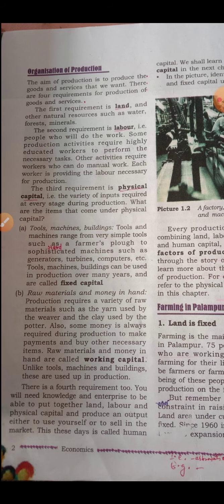The next topic is the organization of production. There are four requirements for the production of goods and services. The first requirement is land — land and other natural resources like water, forests, and minerals.